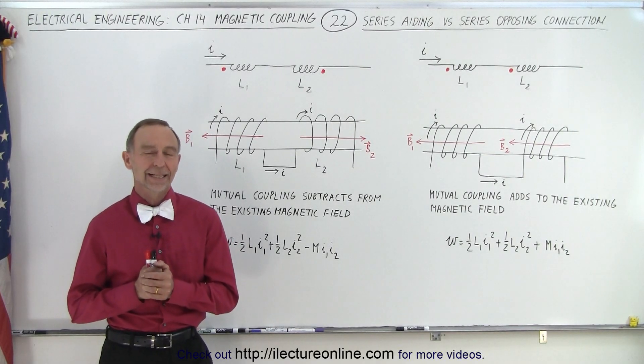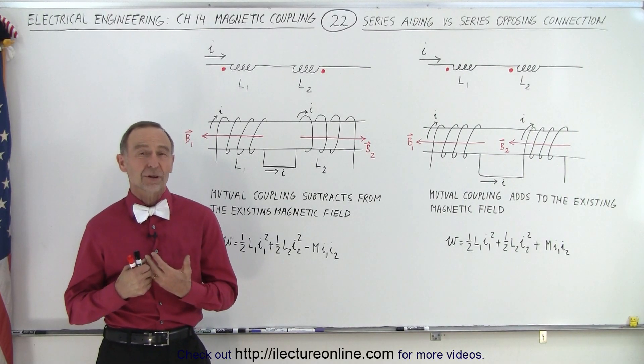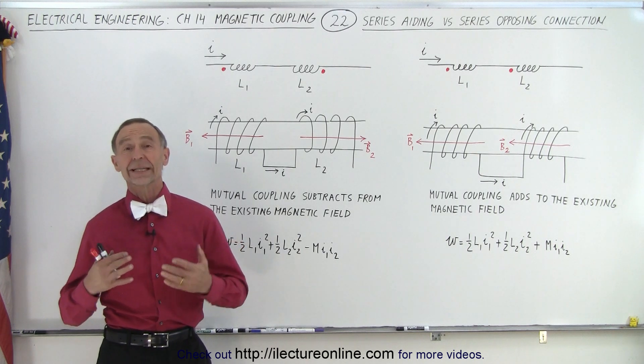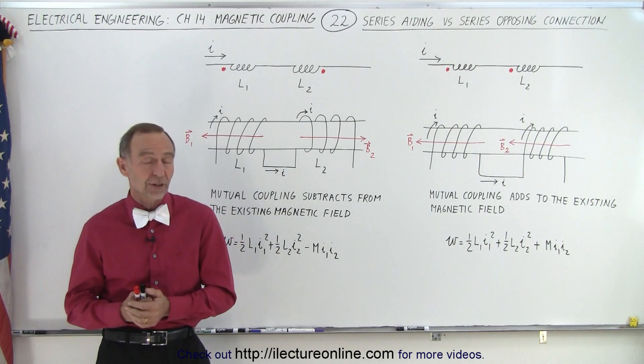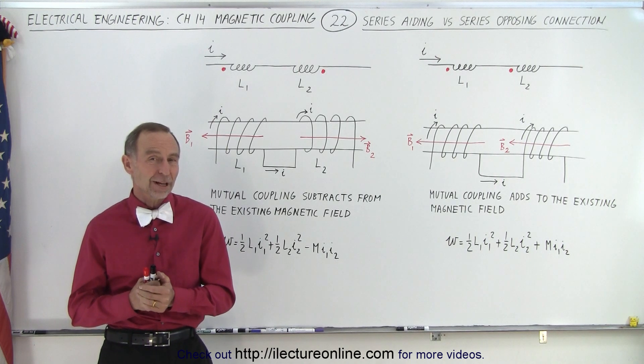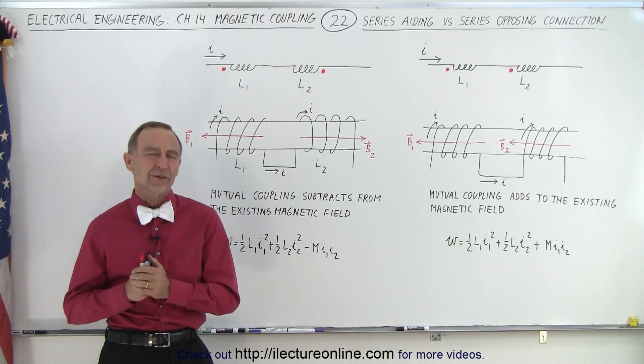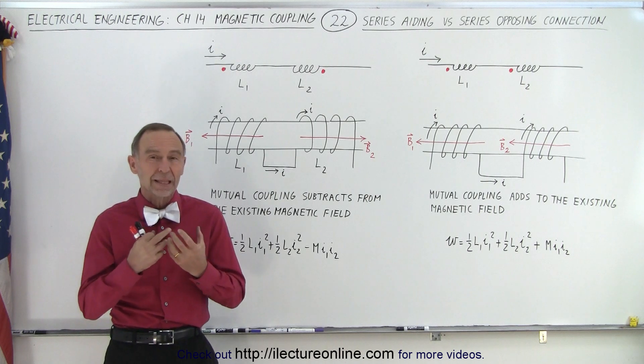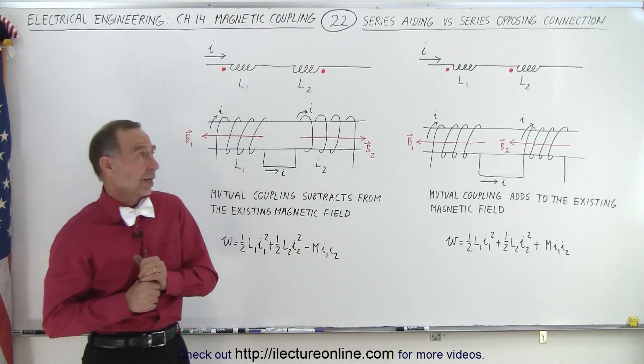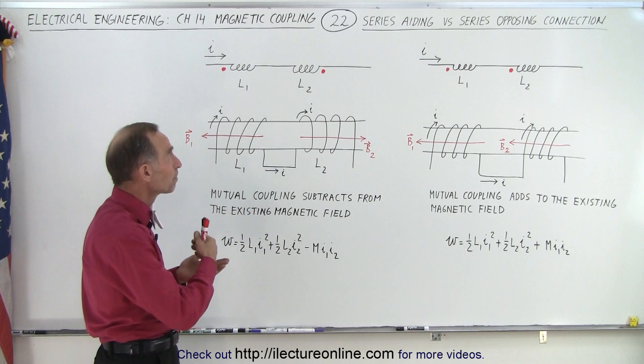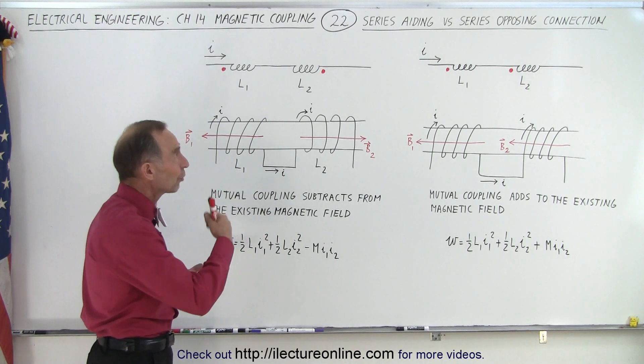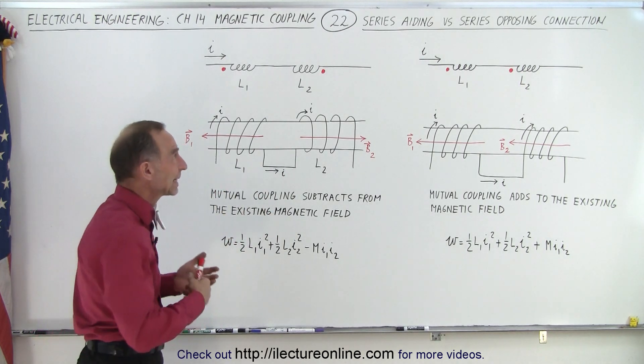Welcome to iLecterOnline. At this point you may have started wondering, how do you actually connect inductors in such a way that you have a dot on one side and a dot on the other side? Well, it turns out it's pretty straightforward and here I wanted to give you that conceptual view of what that looks like. And we're going to do it by showing you the difference between what we call a series aiding versus a series opposing connection.